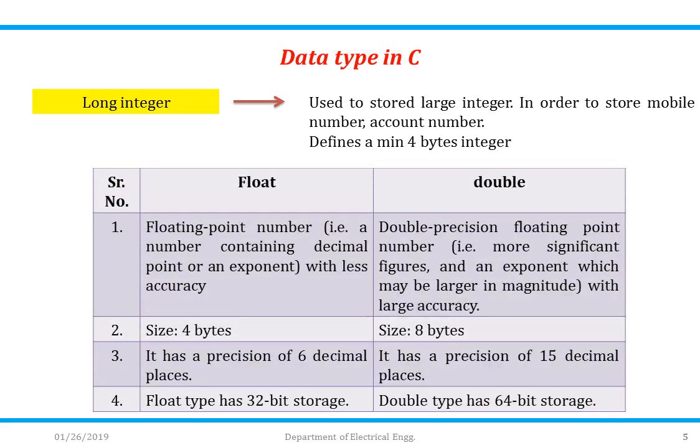Now what is the difference between float and double? Floating point number, that is a number containing decimal point or an exponent with less accuracy. Whereas in case of double, precision floating point number has more significant figures and an exponent which may be larger in magnitude with large accuracy.